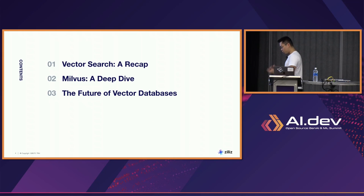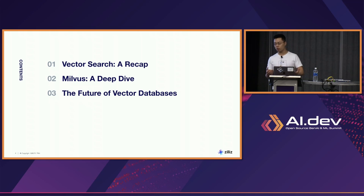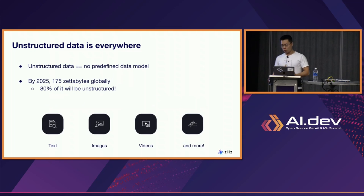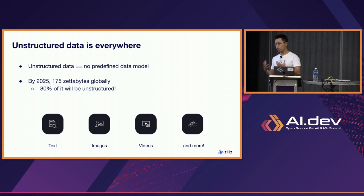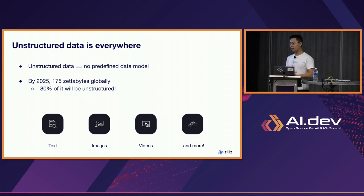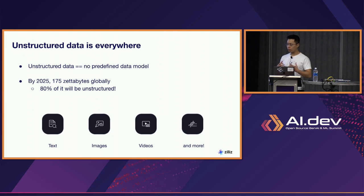Before I talk too much about Milvus and dive into some of the details, I'm going to give a quick recap of vector search and why it's so powerful. Why should you care about vectors? Why should you care about vector search? Vectors are a great way to represent unstructured data. And unstructured data is everywhere. If you look way back in the 60s, 70s, and 80s, when computers were first around, one of the key things they were built to do is store, index, and search large quantities of data. Back then, a lot of data was structured — it was in relational databases and tabular databases, with a data model associated with all the stored data.